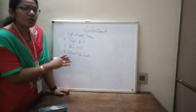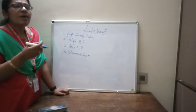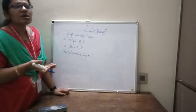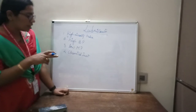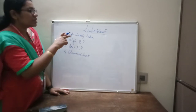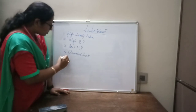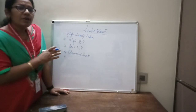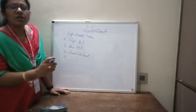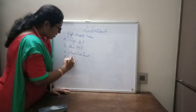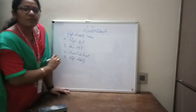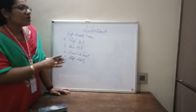Then it should be chemically inert. That means the lubricant should not react with the metal surfaces. If it reacts, rather than acting as a lubricant it will act as a corrosive liquid. So to prevent corrosion or any other wear and tear, we require chemical inertness of the lubricant.